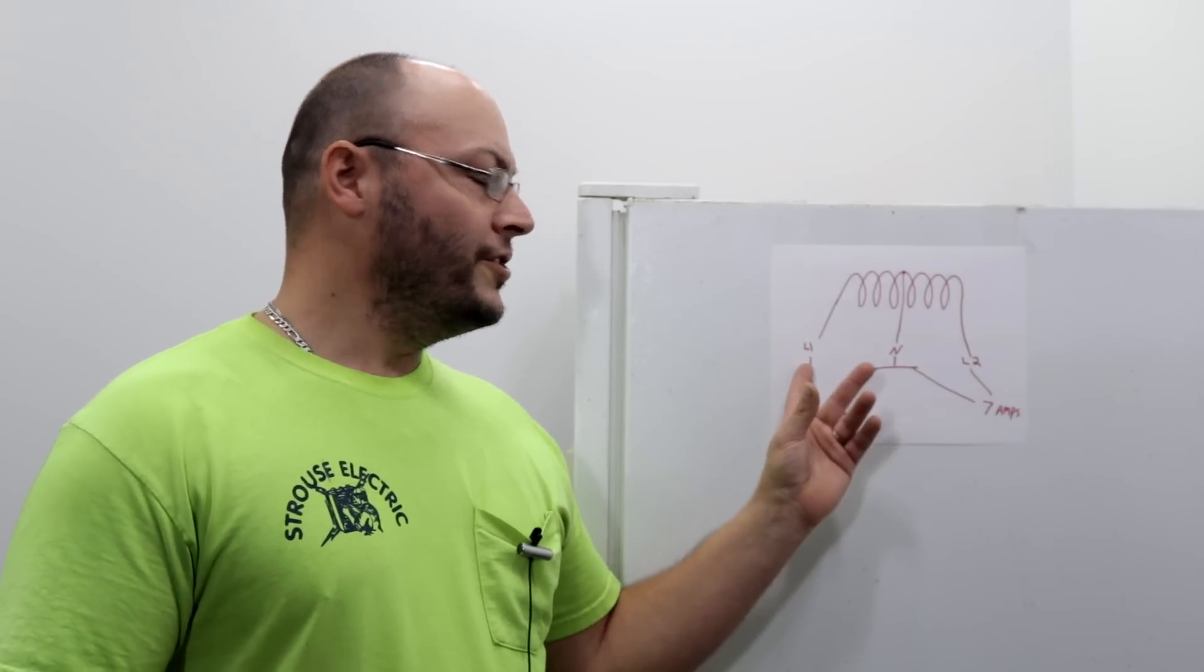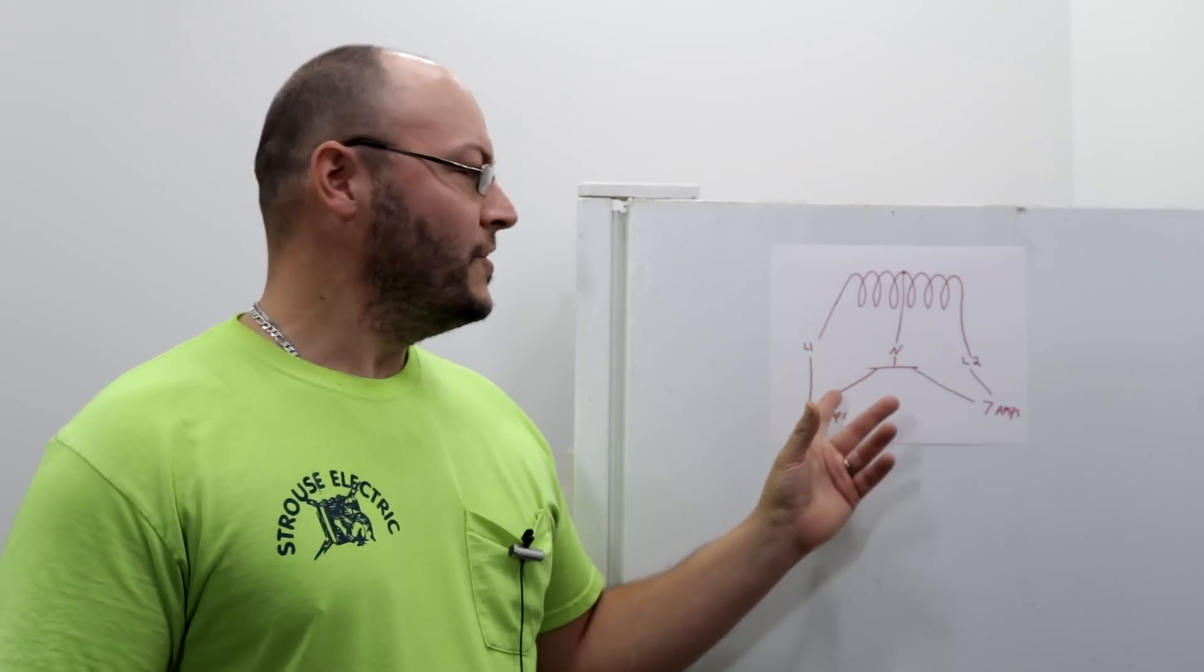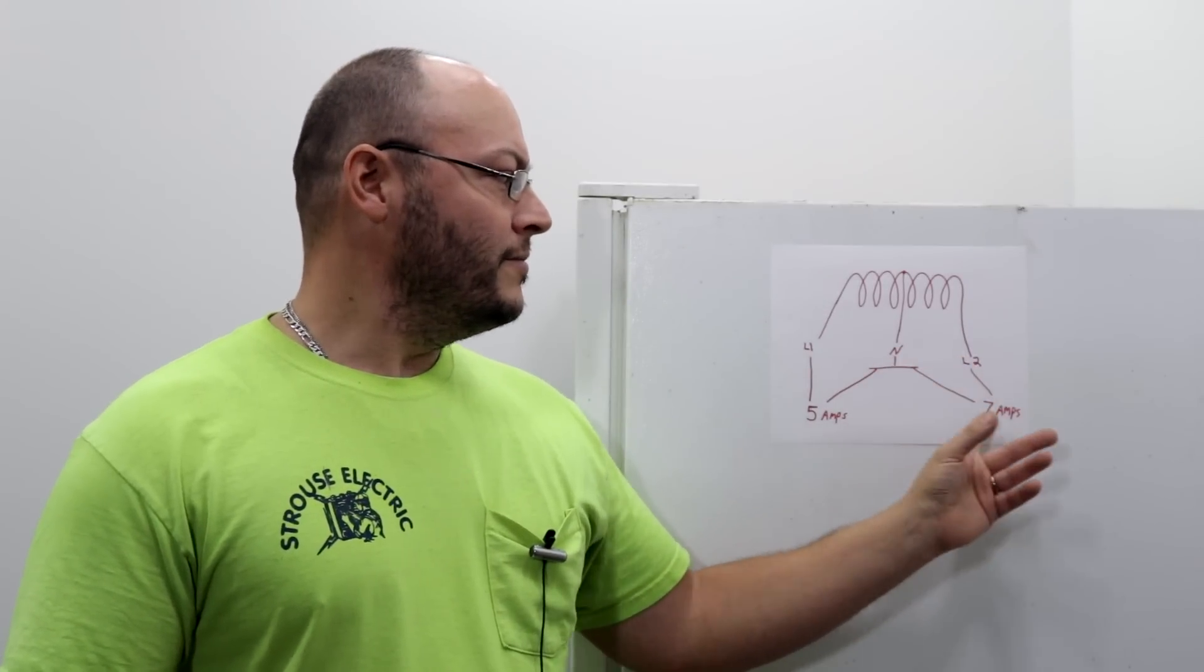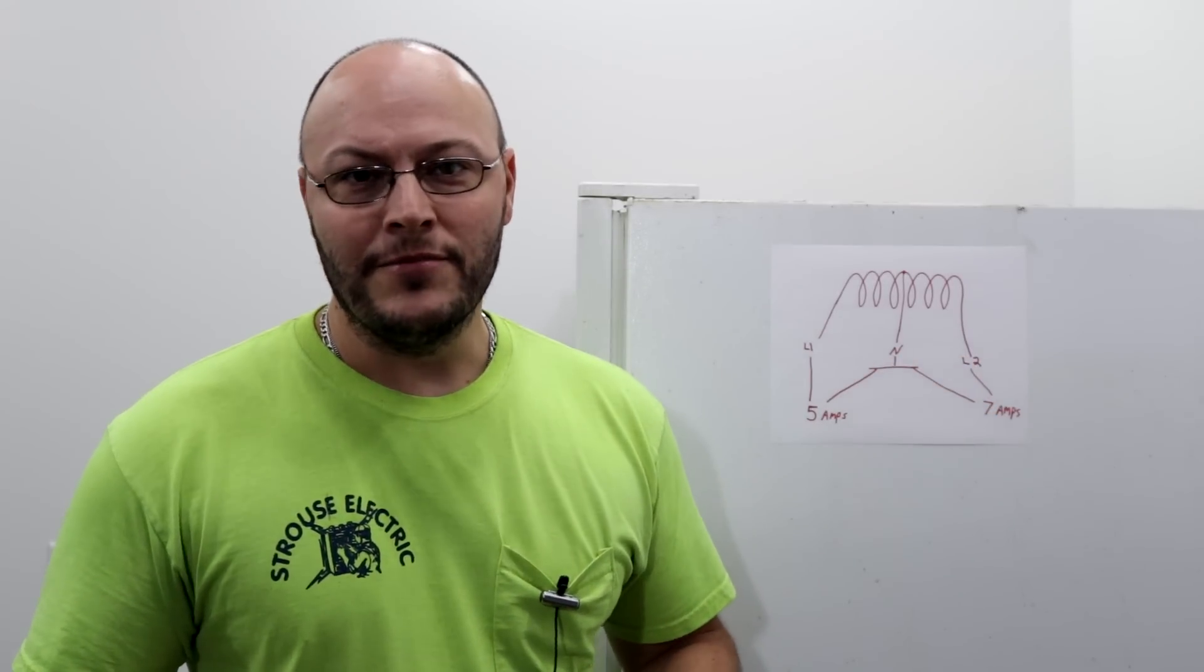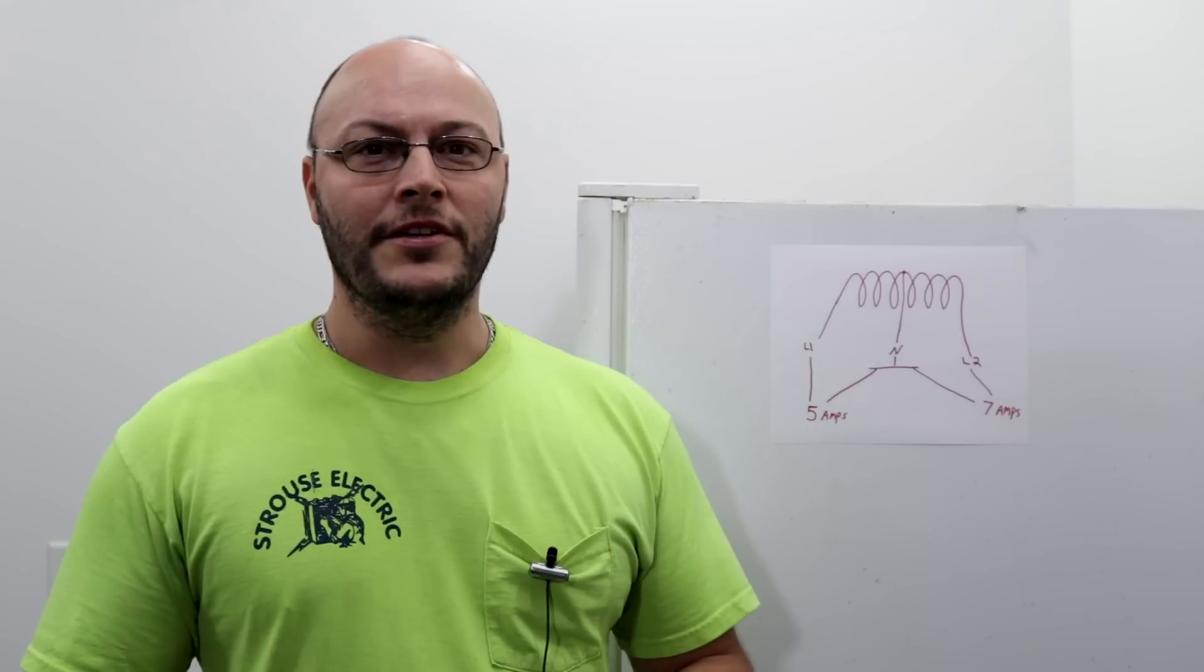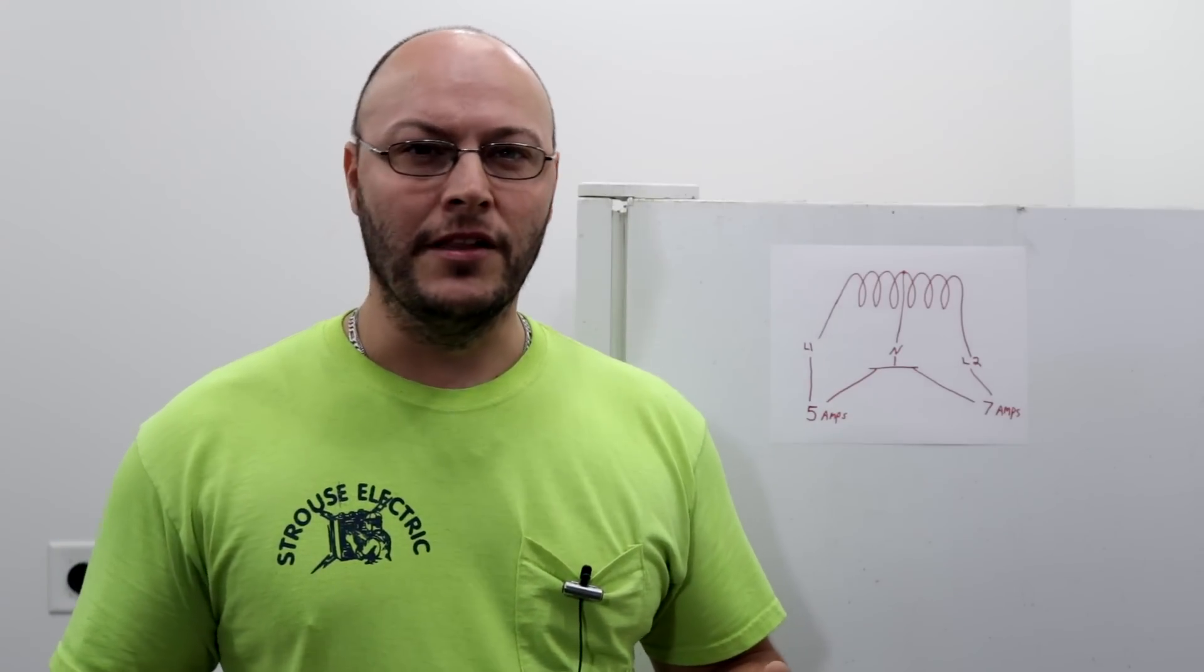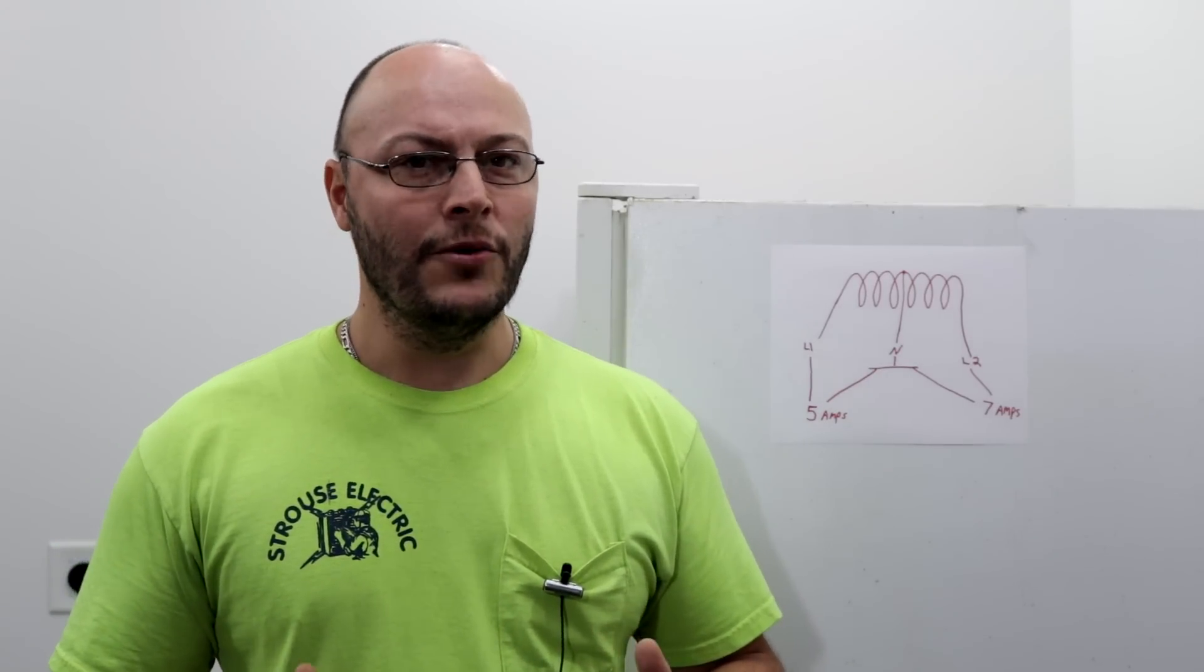So let's say when you're on your A phase or your L1, you have a total of five amps of draw, and when you're on L2 from neutral you have seven amps of draw - that's a combination of lights and whatever else you have running in your house. And a lot of people say the neutral balances the load - not really.